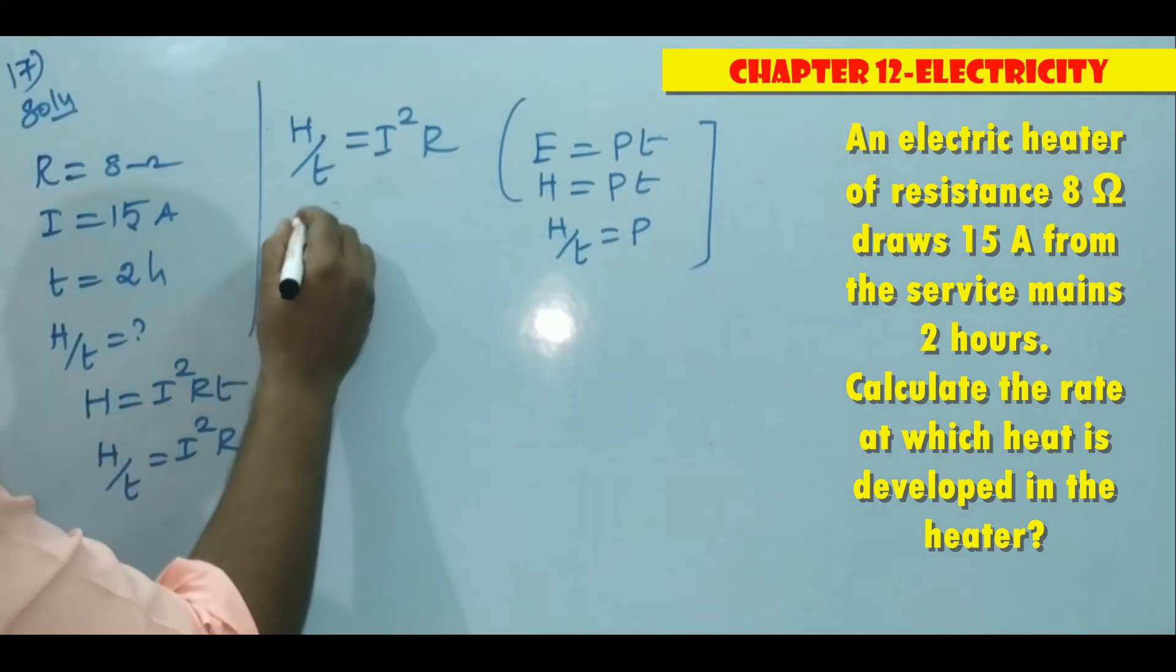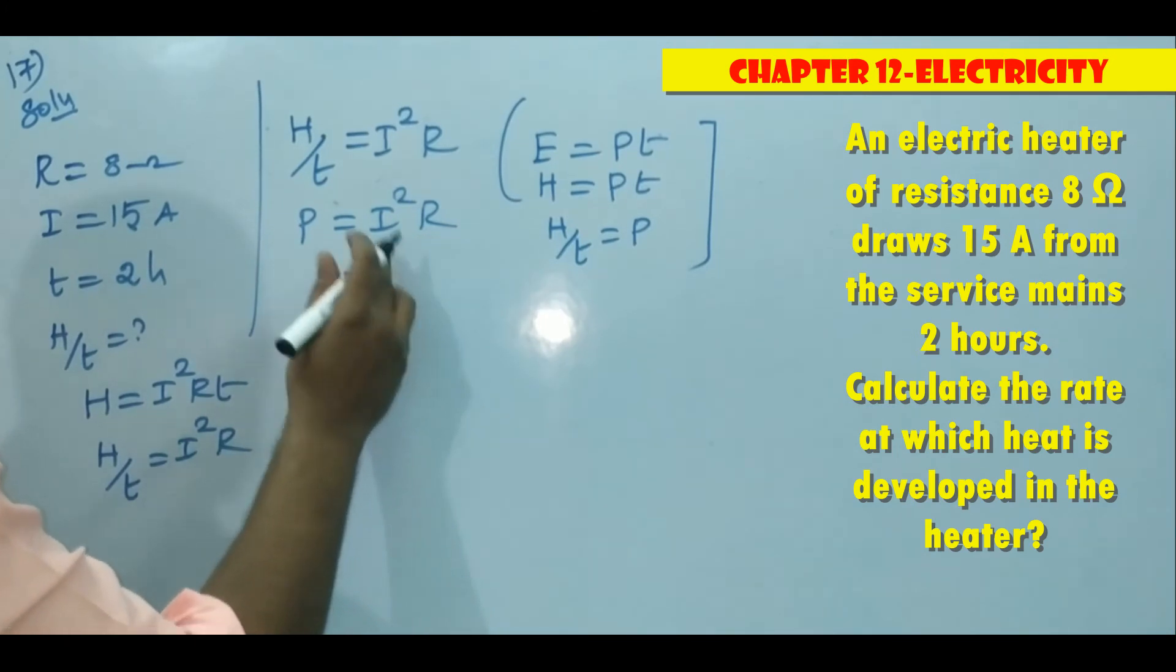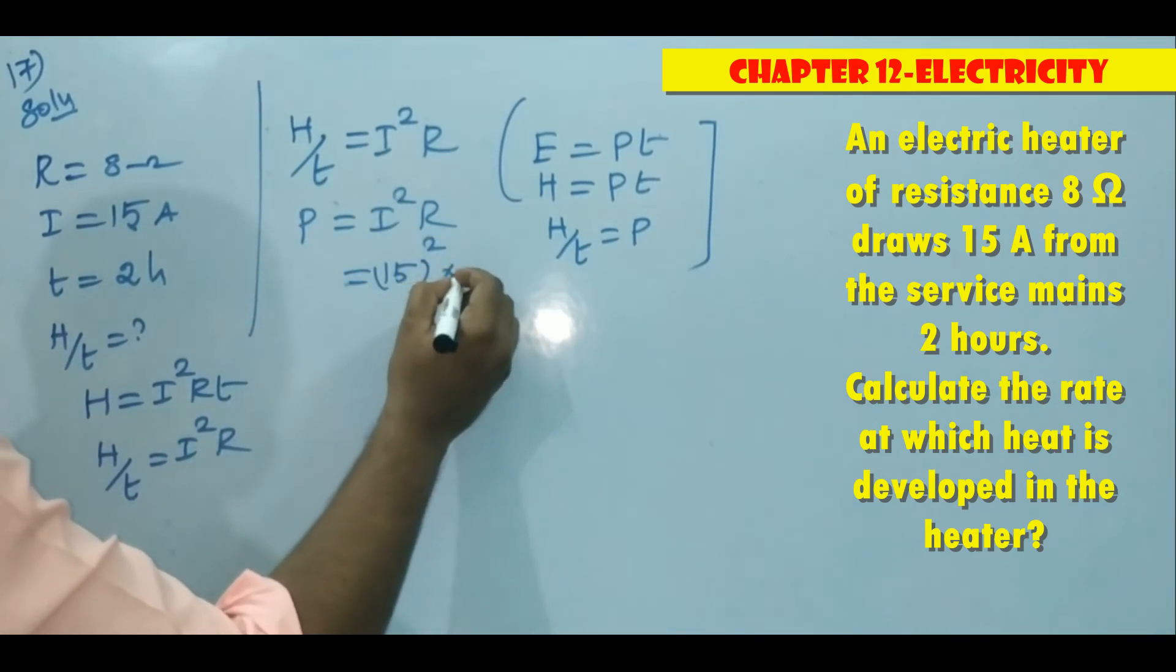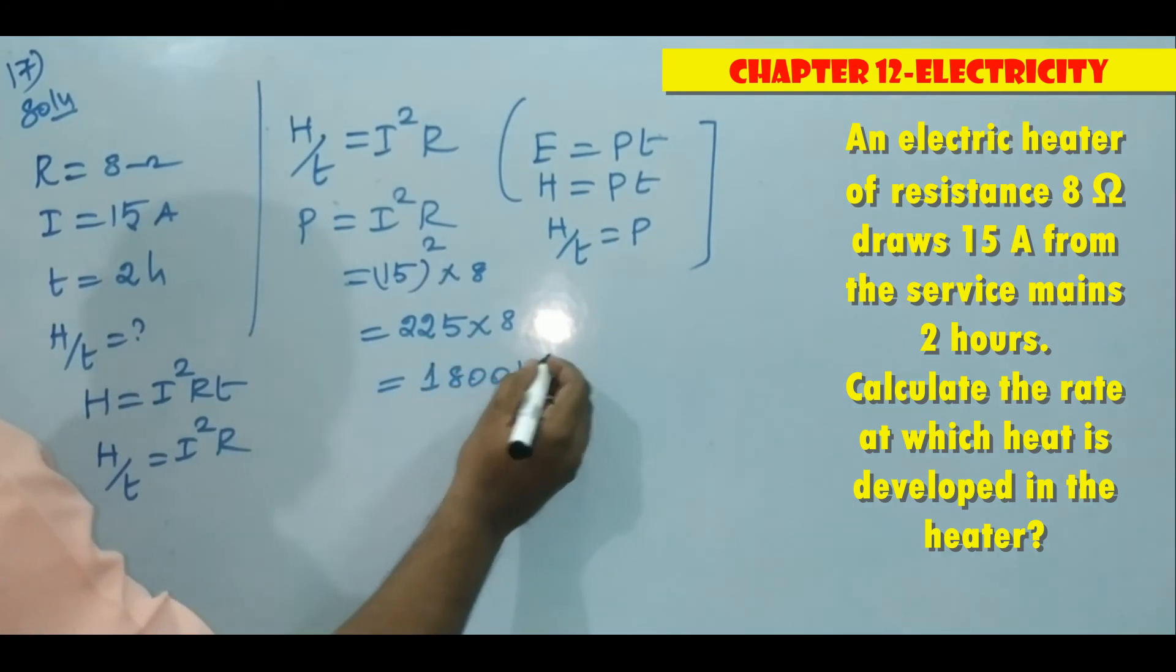So here h by t is equal to power. Then we can write here p is equal to i squared r. So what is i here? 15. Then i squared. 15 squared. r is 8. Then 225 into 8. That means 1800 watt.